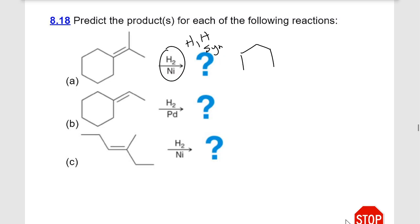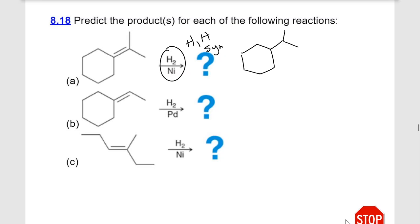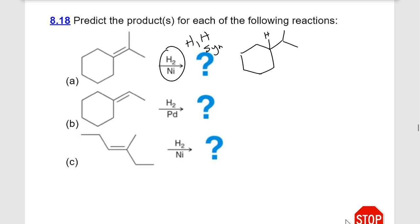If we form stereocenters, we get a pair of enantiomers. In this case we just added hydrogen to each side—we didn't form a stereocenter, so this would be our product. I left the hydrogens off here; I could have drawn those in. Neither of those are stereocenters because this is a plane of symmetry.